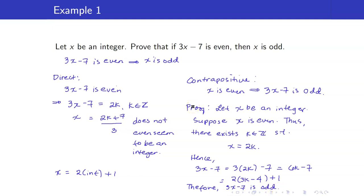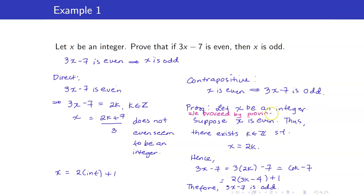Proving an implication using its contrapositive is one of the indirect methods of proving. Whenever you prove using an indirect method, it's best to always guide your reader. Let them know that you are going to proceed by contrapositive. You can insert a statement: 'We proceed by proving the contrapositive,' just to guide your reader.